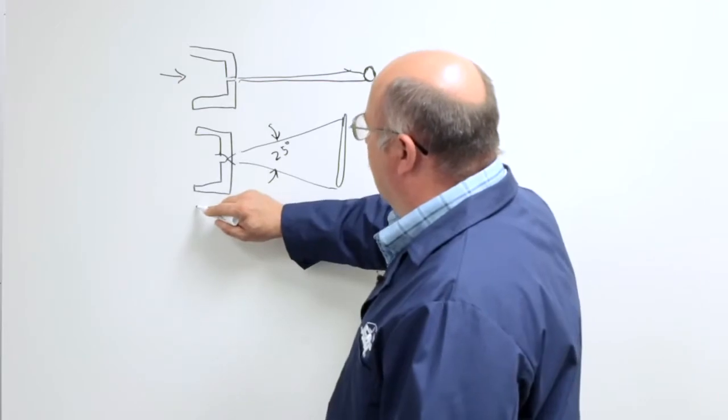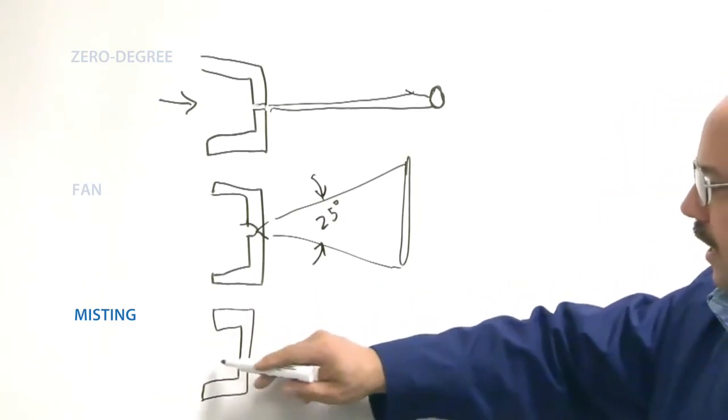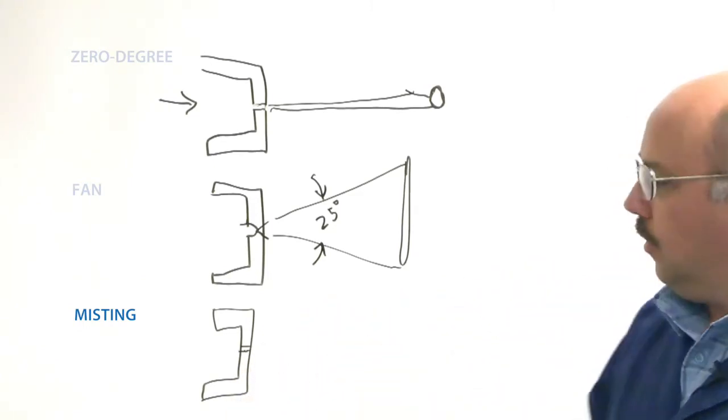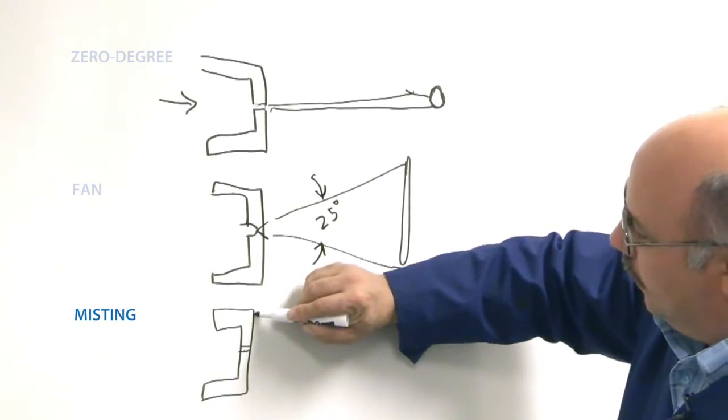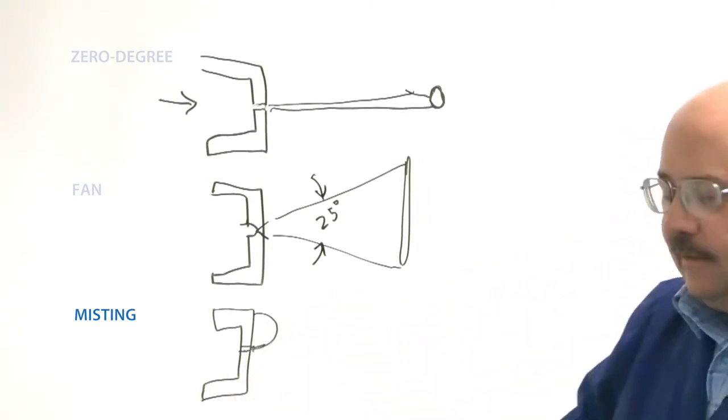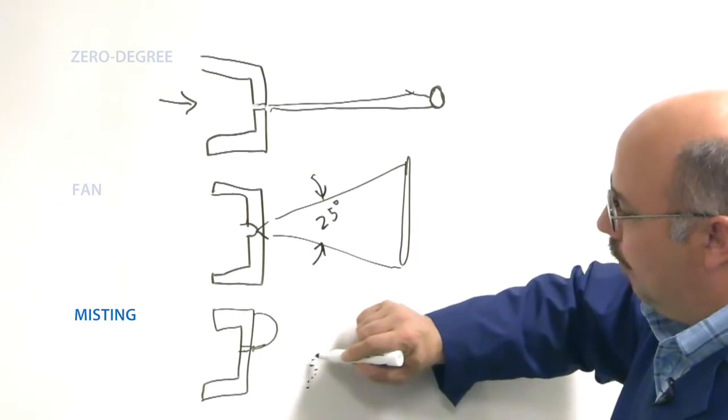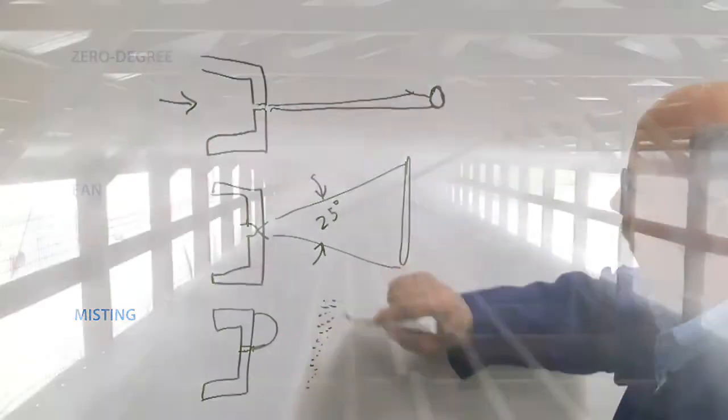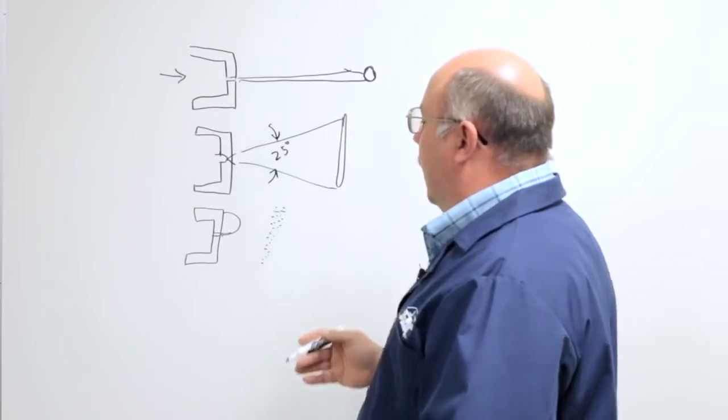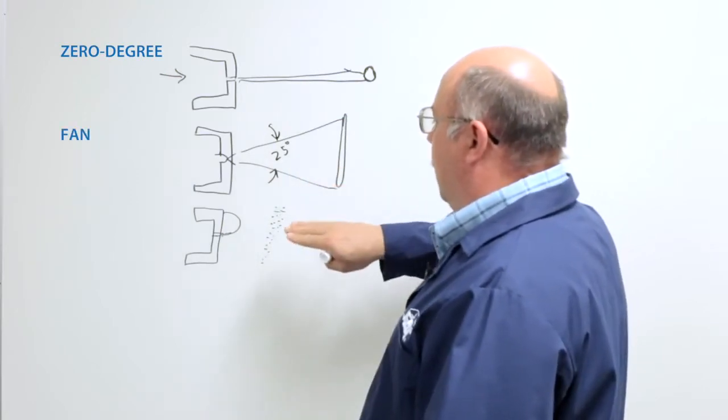The third type of nozzle is a misting nozzle, or sometimes referred to as an impingement nozzle. It starts with the same inner shape with fluid coming in and has a straight hole through it. Usually these are very small in nature. But then there's a small rod that's welded and attached, and the water hits that immediately upon exiting the nozzle. It disperses the water into many thousands of tiny droplets, making a mist or fog. That's used for evaporative cooling and applications like that. So those are your three basic types of nozzles: the zero-degree or direct impact, the fan nozzle, and the misting nozzle.